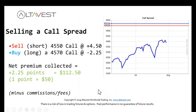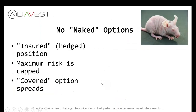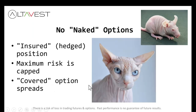Here's an example of a call spread. The $45.50 call — you sell it, collect four and a half points. At the same time, you buy the $45.70 call, paying two and a quarter points. The net result is you collect $112.50, taking into account commissions. That's selling an out-of-the-money call spread. Selling an out-of-the-money put spread is the same idea with puts — sell one for three, buy one for one, net collect two points, equaling $100 minus commission. These are not naked options — everything is predetermined risk. That's a covered option spread, no naked options trading.